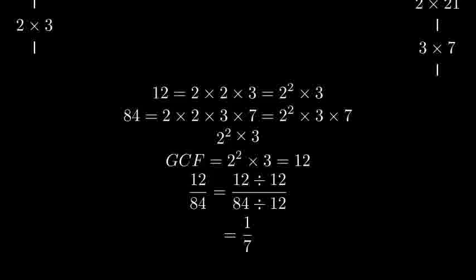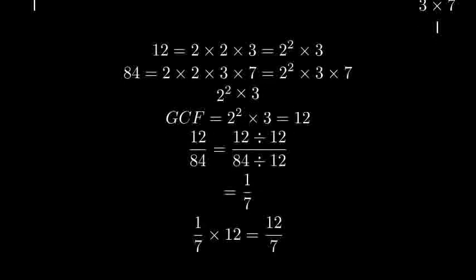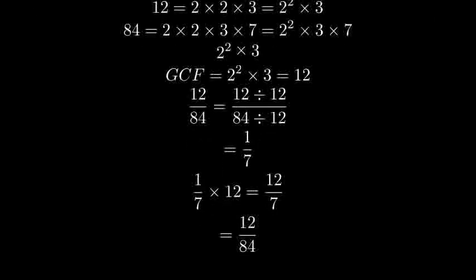Let's verify our answer is correct. If we multiply 1 seventh by 12, we should get back to our original fraction of 12 over 84. 1 seventh times 12 equals 12 sevenths, which is the same as 12 over 84.